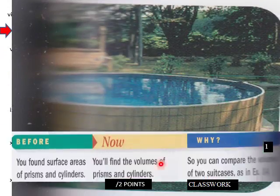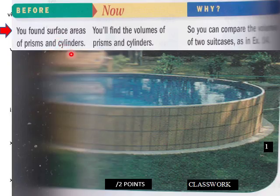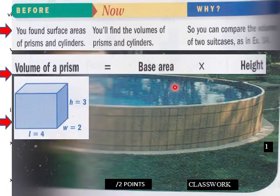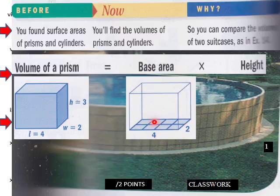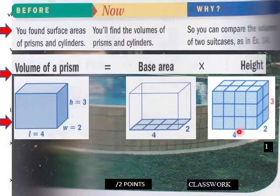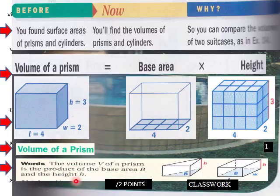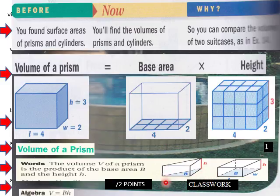Okay, into our lesson today, you found surface areas of prisms and cylinders. You'll find the volumes of prisms and cylinders. So the volume of a prism equals base area times height. Here is a prism. So base area times height here. And that would be the volume of that prism. So the volume of a prism is the product of the base and the height, h. That would be the volume of a prism. So in algebra, volume equals base times height. That would be the volume.